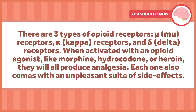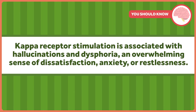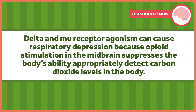There are three types of opioid receptors: mu receptors, kappa receptors, and delta receptors. When activated with an opioid agonist, like morphine, hydrocodone, or heroin, they will all produce analgesia, but each one comes with an unpleasant suite of side effects. Kappa receptor stimulation is associated with hallucinations and dysphoria — an overwhelming sense of dissatisfaction — anxiety, and restlessness. Delta and mu receptor agonism can cause respiratory depression because opioid stimulation in the midbrain suppresses the body's ability to appropriately detect carbon dioxide levels in the body, which can cause a person to simply stop breathing for a period of time.